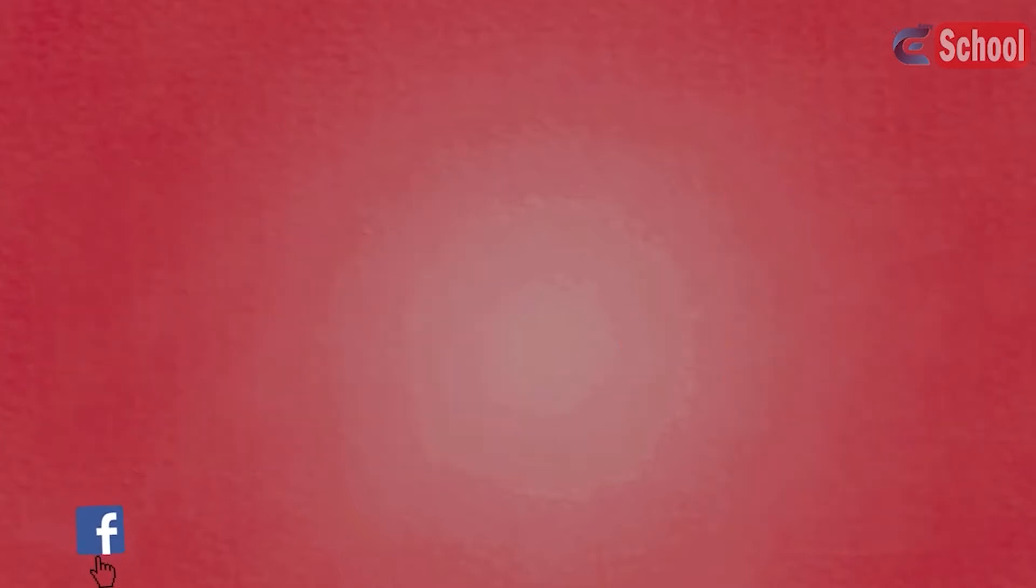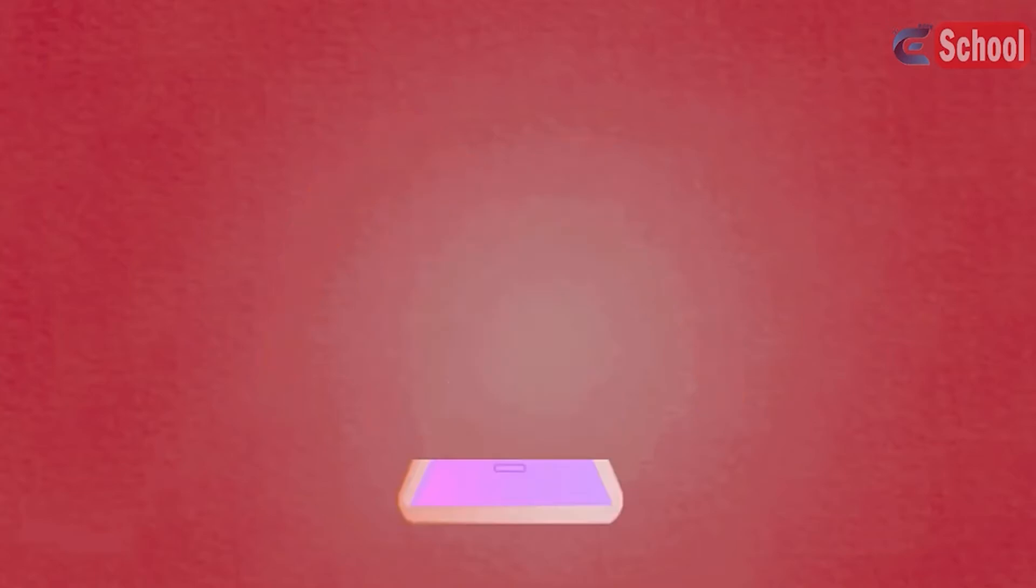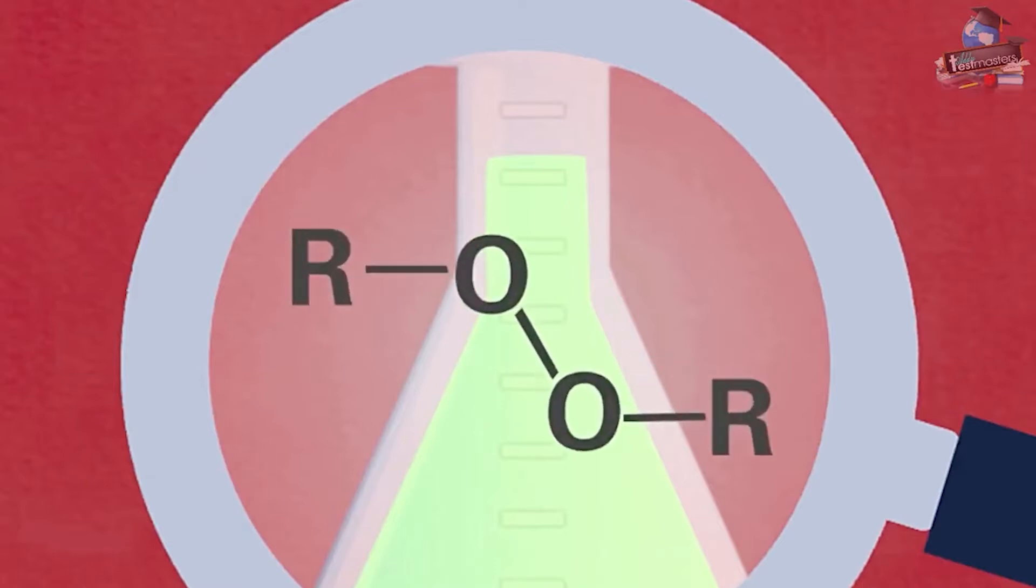There are also enzymes—biological agents which break apart fats, proteins, and starch found in food stains. Fragrance chemicals are added to give your clothes that fresh smell, whilst bleaches containing peroxides or fluorescent whiteners give your clothes renewed brightness.